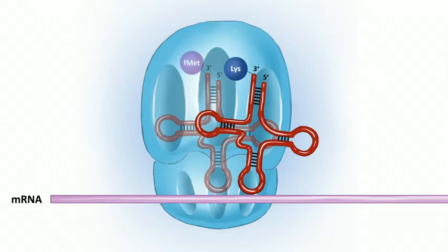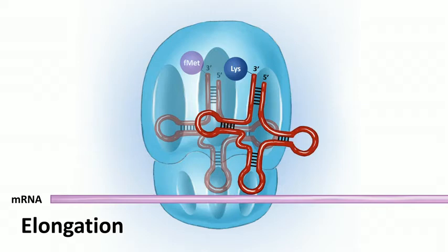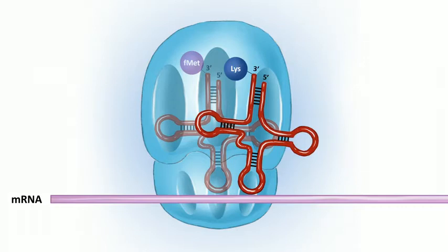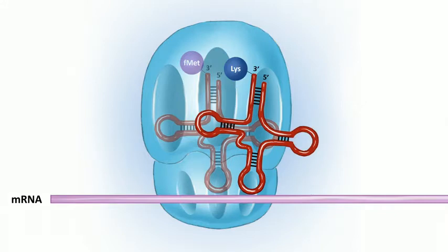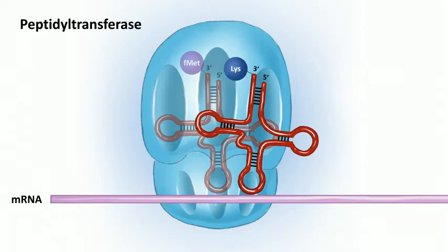Now we move on to elongation — this is where we start putting amino acids together into a long chain. The incoming charged aminoacyl-tRNA binds the ribosome at the A site. This binding requires elongation factors, not initiation factors. Elongation factors help the incoming tRNA bind to the A site, and this also uses energy from GTP. Now with two tRNAs side by side — one in the P site and one in the A site — the large 50S ribosomal subunit has what we call peptidyl transferase activity, which transfers the amino acid from the P site onto the amino acid at the A site.